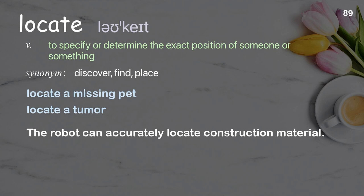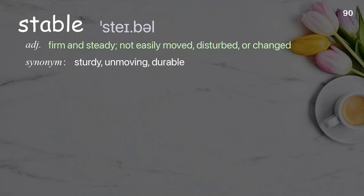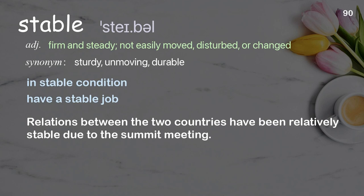Stable: firm and steady; not easily moved, disturbed, or changed. Examples: in stable condition, have a stable job. Relations between the two countries have been relatively stable due to the summit meeting.